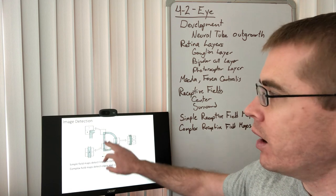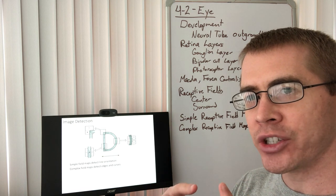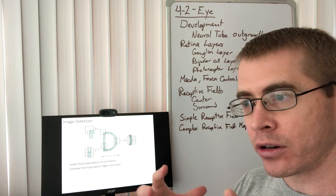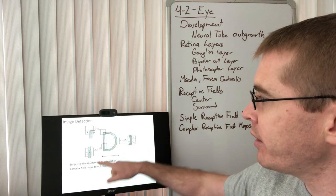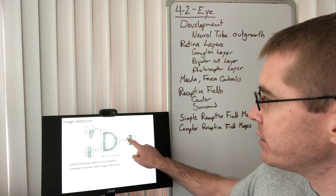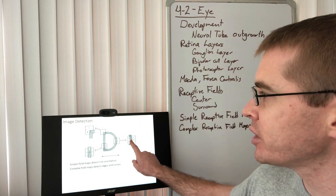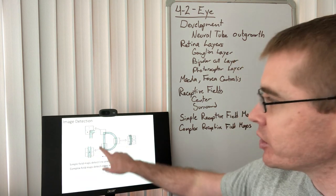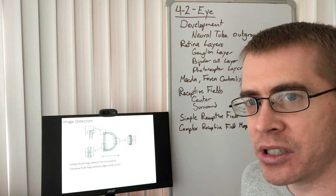Here again we're looking at edge detection — shining a light progressively over a complex receptive field map. When we get halfway across, the ganglion cells start really lighting up because they detect an edge. As we fill it up completely with light, it's not responding at all. That's the same contrast scenario: when there's no contrast, when the area is equal across the entire receptive field, the ganglion cell doesn't respond. What we're measuring here is the ganglion cells and how they respond to light acting on the photoreceptor cells.